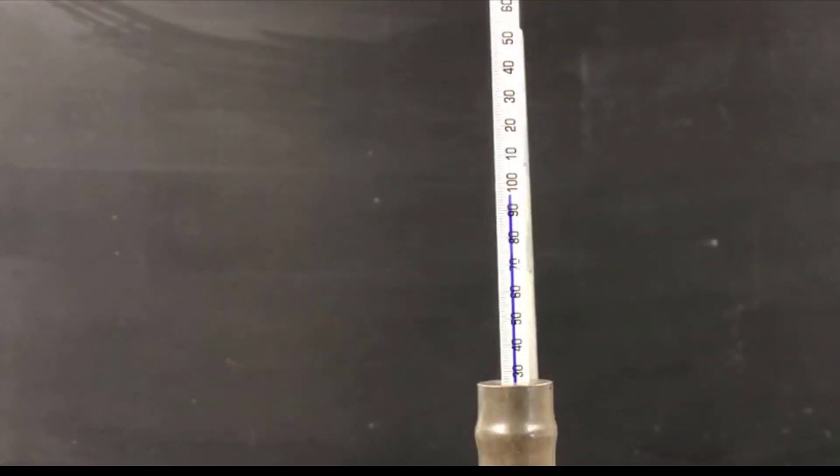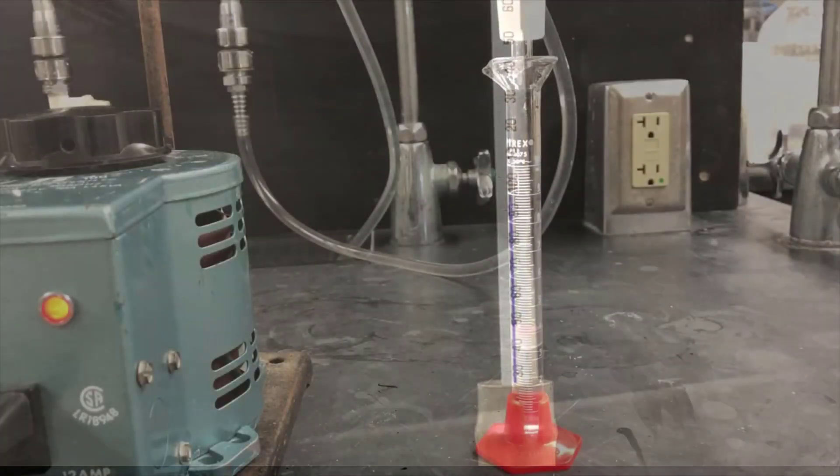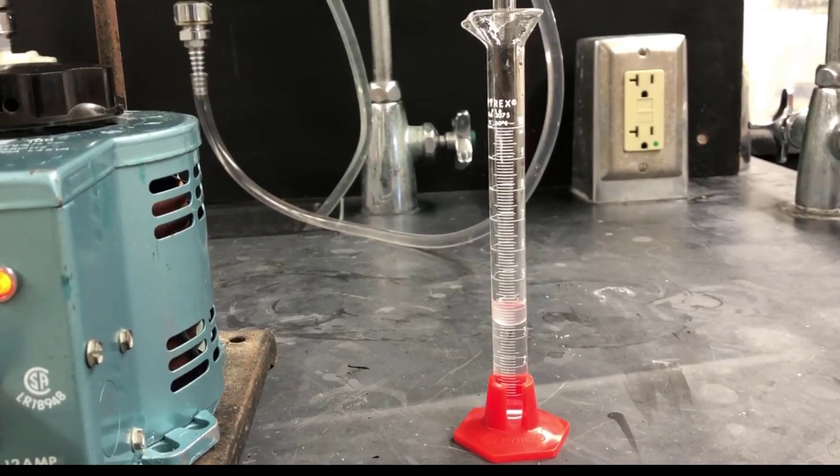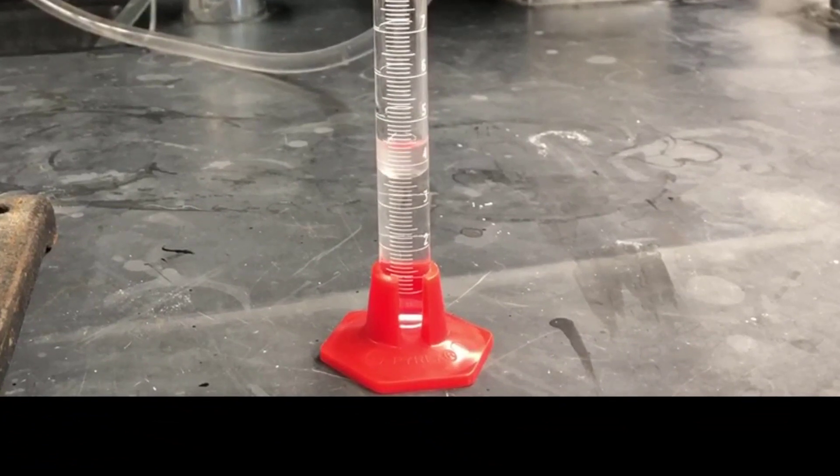Here you can see the temperature of the distilling vapor, which is just below 100 degrees Celsius. We'll collect about 4 or so milliliters of distillate. That will give us enough cyclohexanone product to work with. I'm zooming in here so you can see the distillate more clearly.